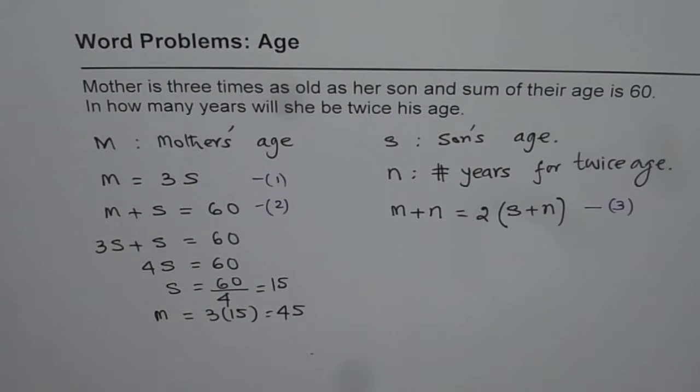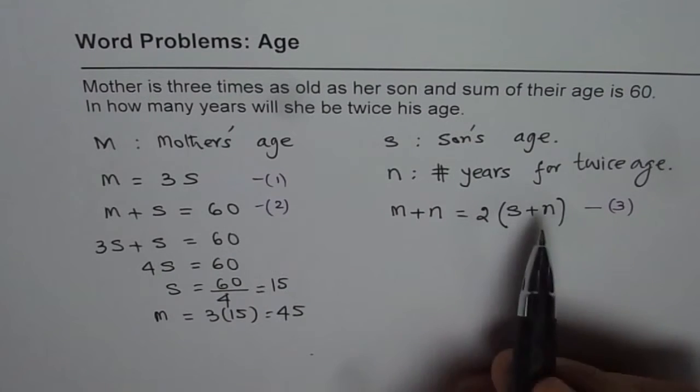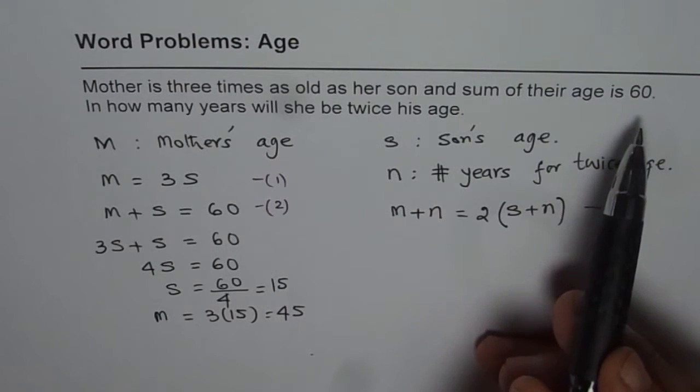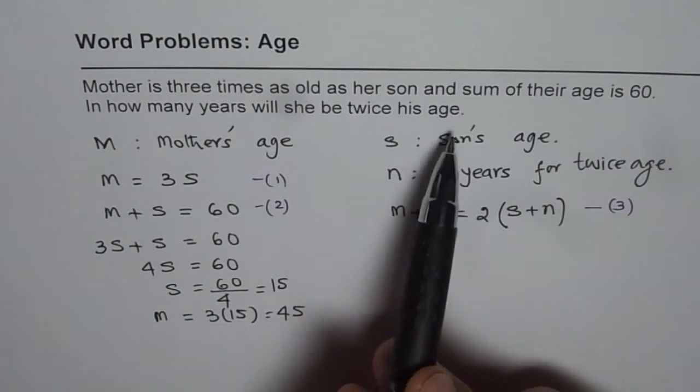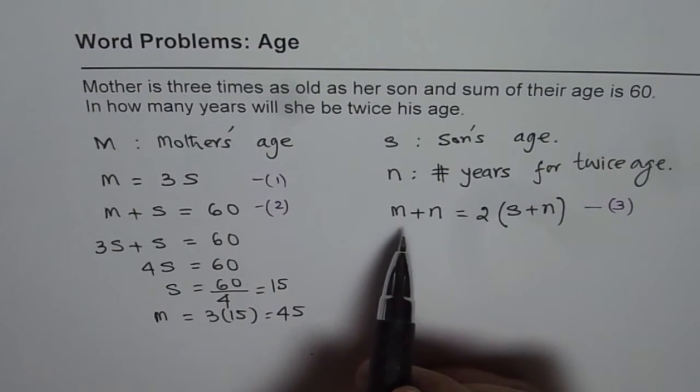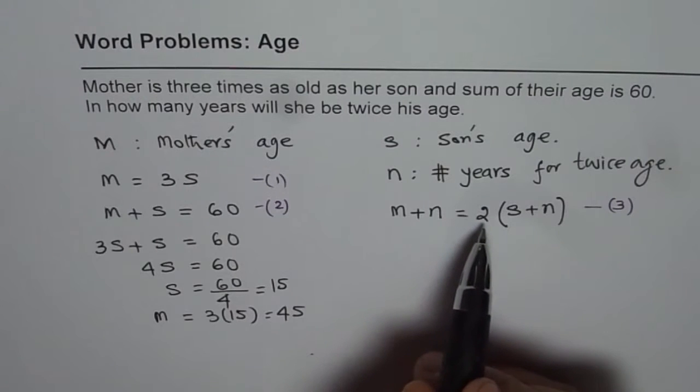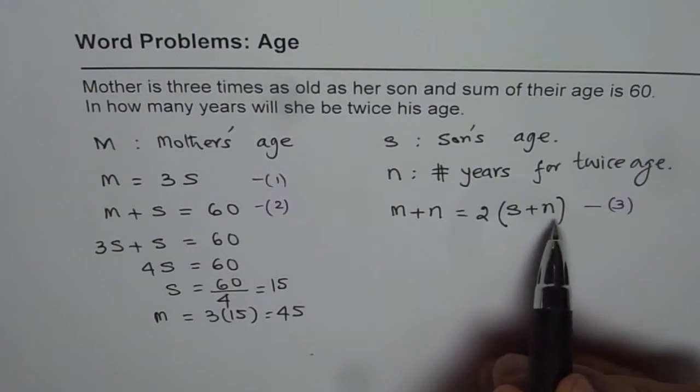So we have got these two current ages. Now the second part of the question is, in how many years will she be twice his age? For that, the equation is M plus N equals 2 times S plus N.